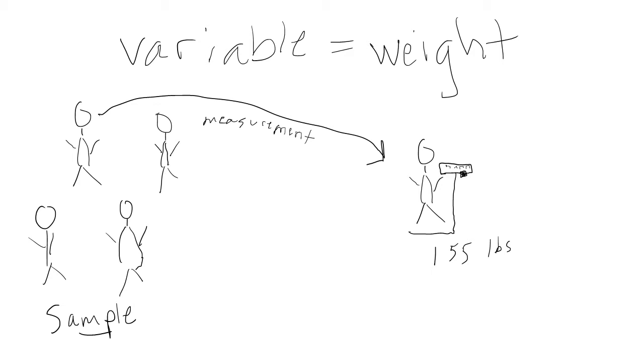Measurement is how we capture a specific population member's value for a variable. For example, if our variable is weight, we could measure each member of our sample's weight using a scale.